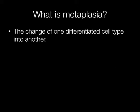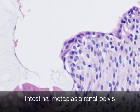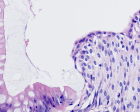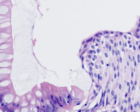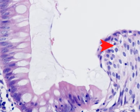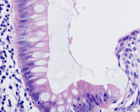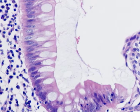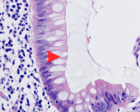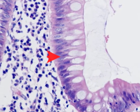Metaplasia is the change of one differentiated cell type into another. This is an example of metaplasia in the renal pelvis. The epithelium of the renal pelvis is normally urothelium or transitional epithelium, which you can see on the right, and as the picture moves towards the left you can see it changing into a columnar mucous-secreting epithelium. This is an example of intestinal metaplasia in the renal pelvis.